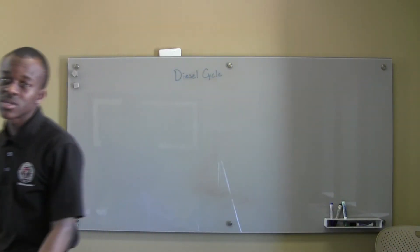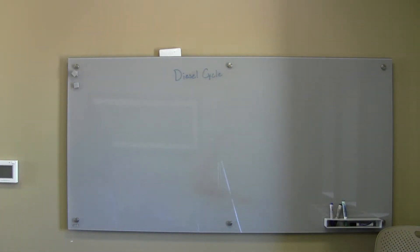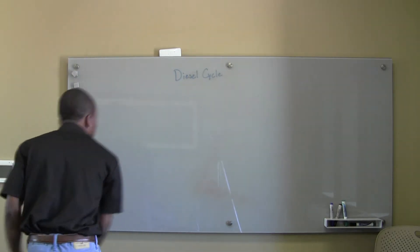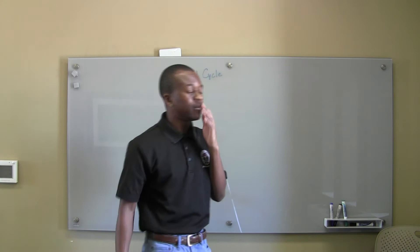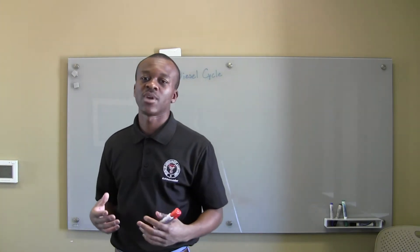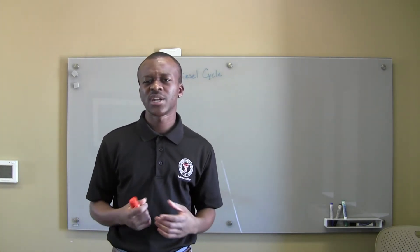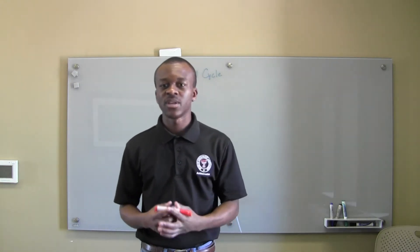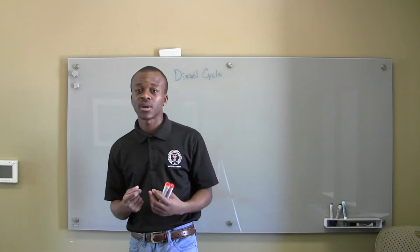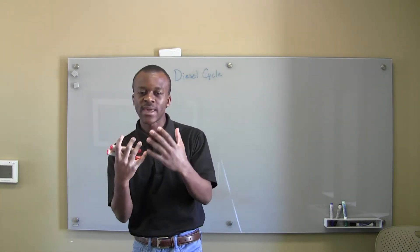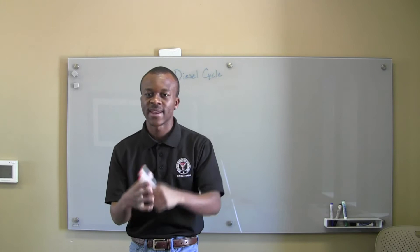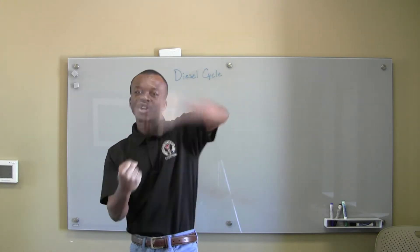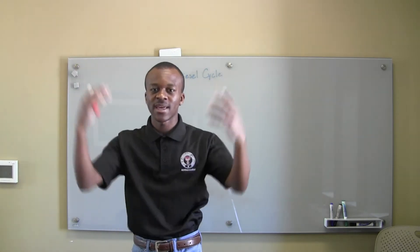Hello everybody. Today we're going to be talking about the diesel cycle. Basically, what you have with the diesel cycle is something sort of different from the Otto cycle. With the diesel engine, we have a compression ignition engine. In the Otto engine, we have a spark plug — the fuel is loaded in, compressed, sparked, and ignited, generating work by expanding the piston.